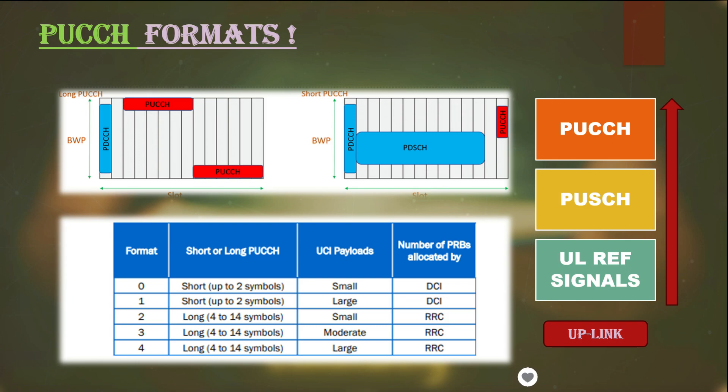All UEs or devices are normally multiplexed on the same channel. If short PUCCH is planned for a cell, then format 0 or format 2 can be used.